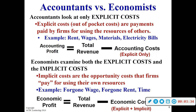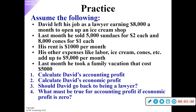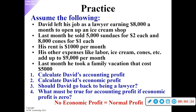Here's an example: David left his job as a lawyer earning eight thousand dollars a month to open an ice cream shop. Last month he sold five thousand sundaes for two dollars each and eight thousand cones for a dollar each. He has a thousand dollar rent, other expenses like labor and ice cream adding up to nine thousand dollars a month, and he took his family on a vacation costing five thousand dollars. What is his accounting profit?